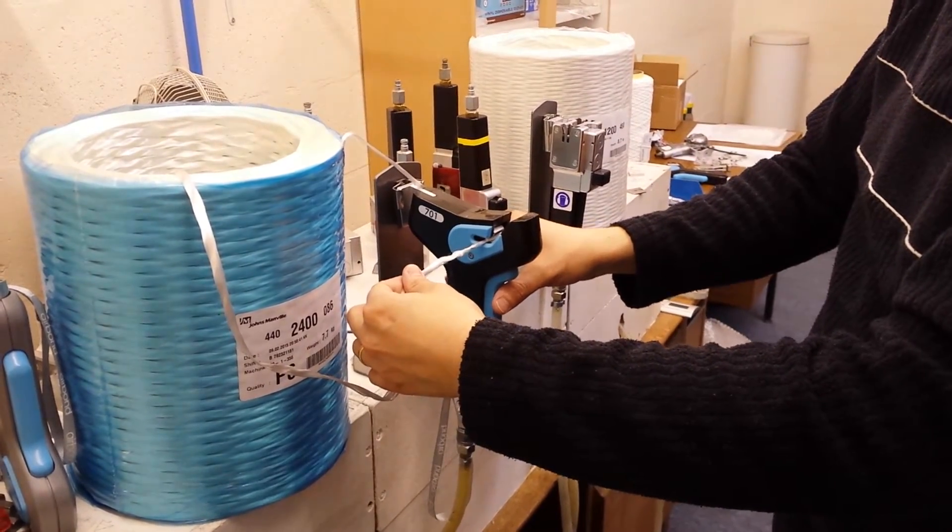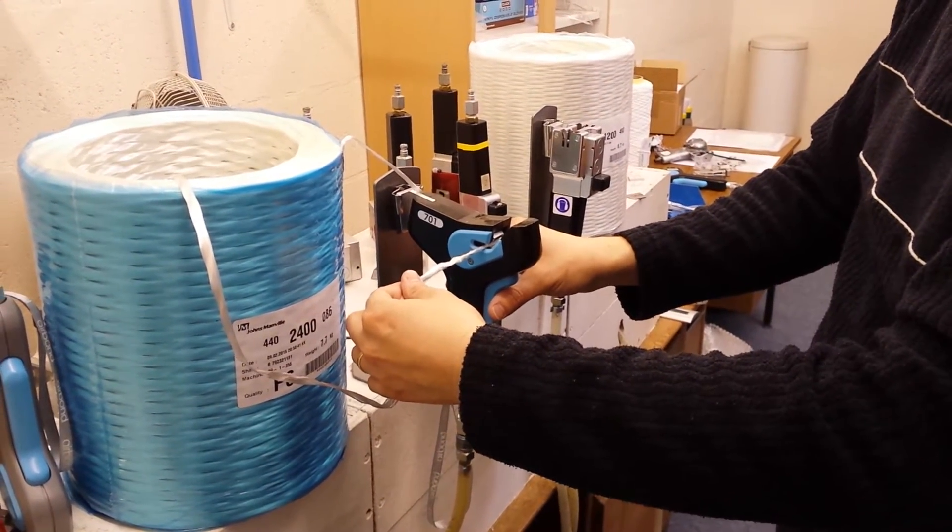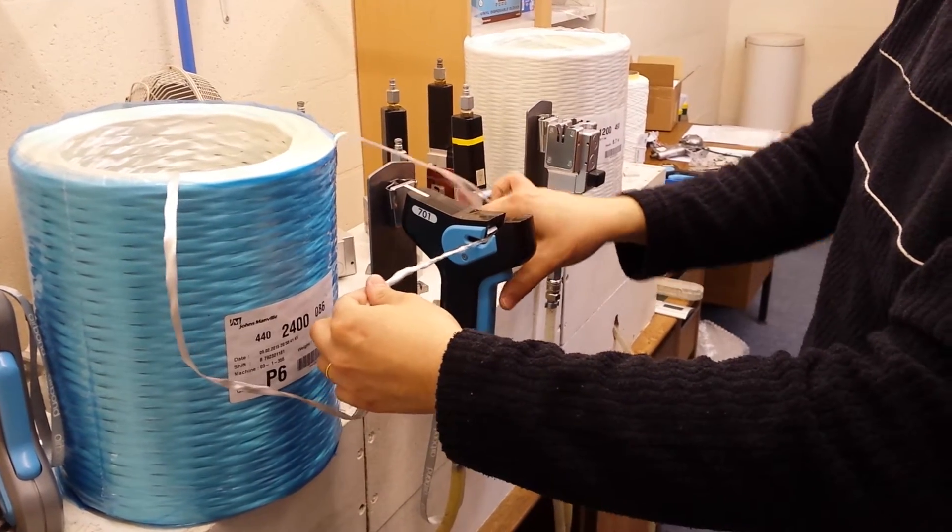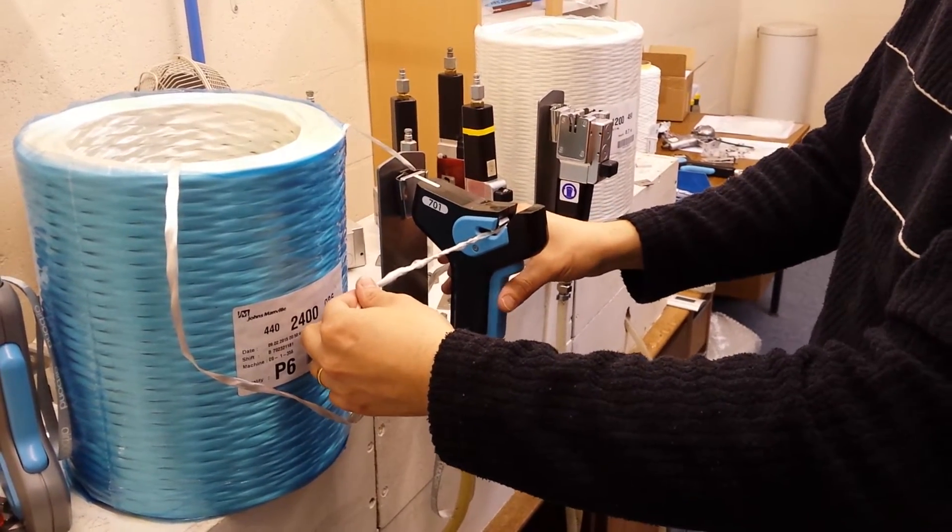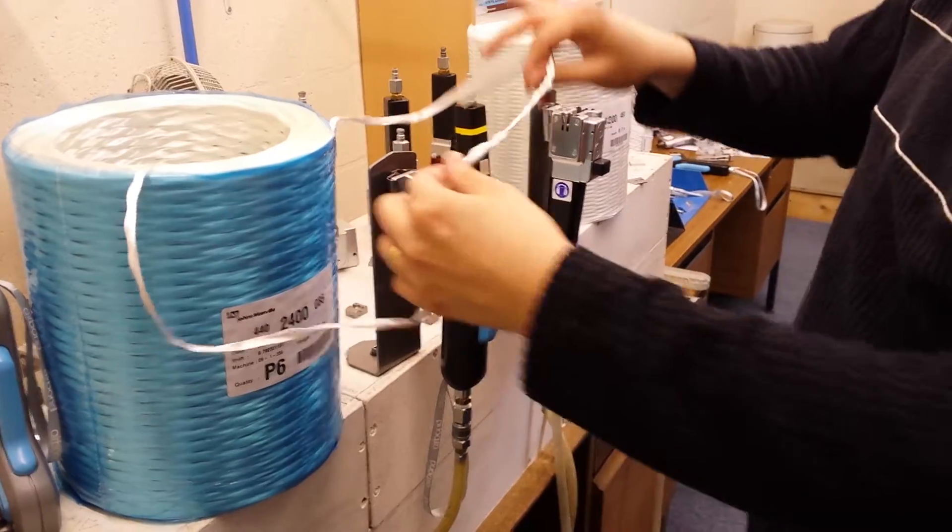Pull it until you see it emerge from the splicer. Two splices, around 80% strength. Three splices, 90% strength.